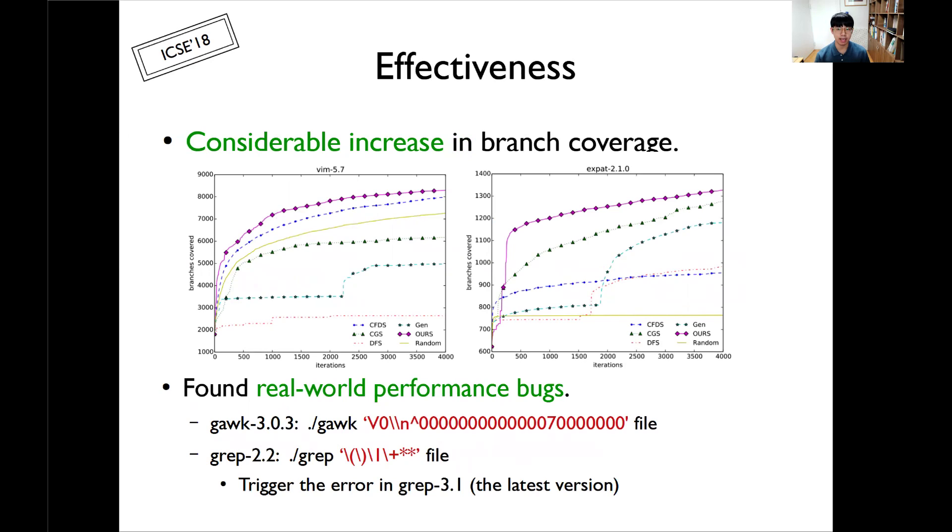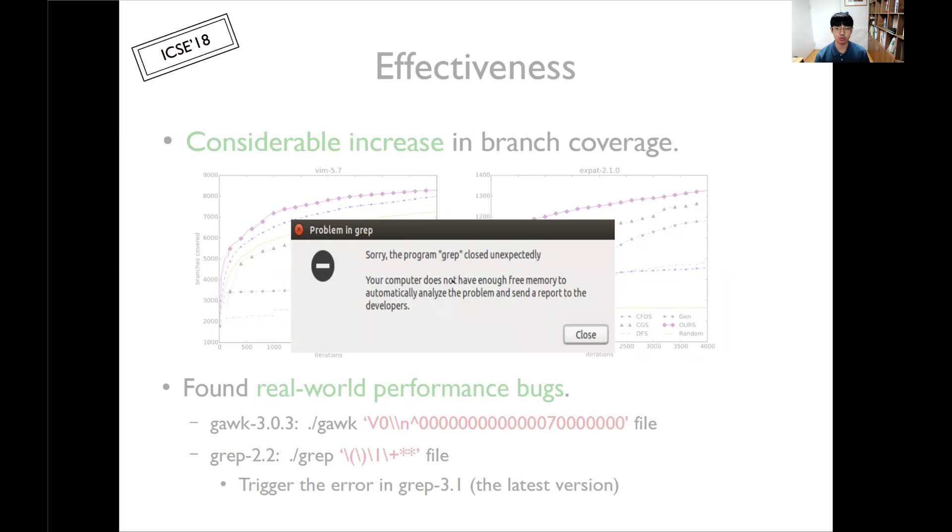This is the preview of my experimental results for our approach. Our automatically generated search heuristic for each program can consistently achieve the highest branch coverage. And our search heuristic can also find real performance bugs in two open source programs. For example, the input we found in grep can trigger an error in the recent grep versions. If you're wondering whether this simple input can trigger the real error, just type it in your laptop or desktop. Then you can see this error message on your laptop and it will no longer work. Anyway, let me explain the details of our technique.